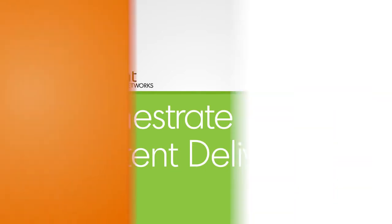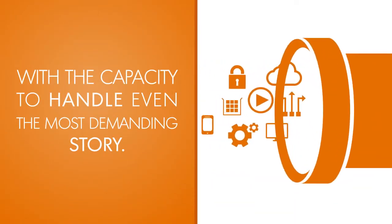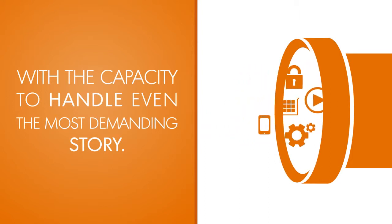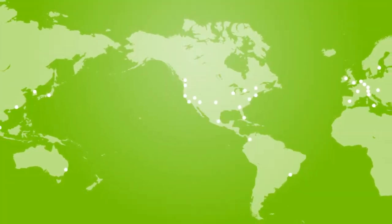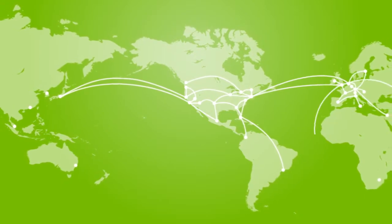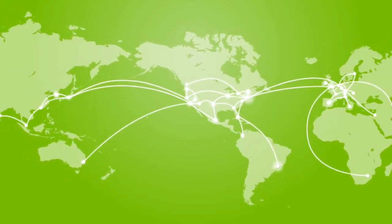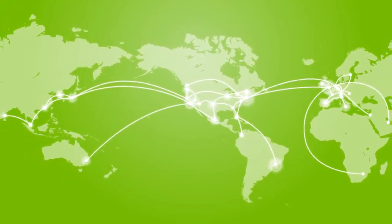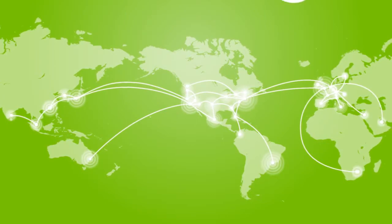Orchestrate Content Delivery helps you keep your story flowing smoothly around the world and around the corner. With physical locations all over the world, you won't have to worry. You can focus on what's important — making a better story.